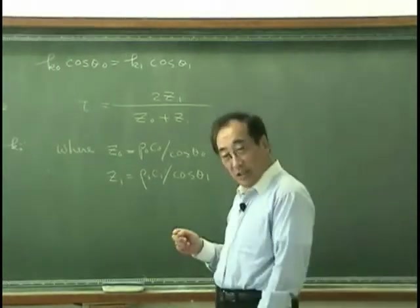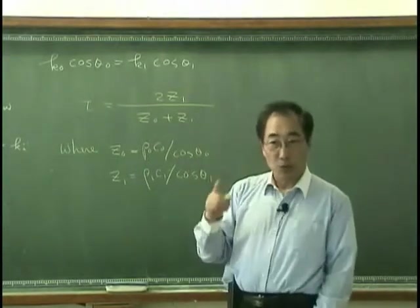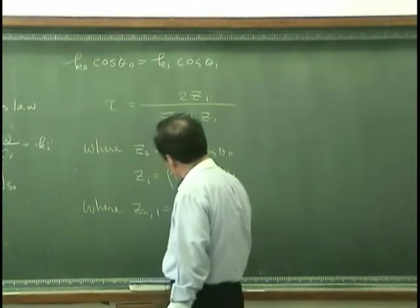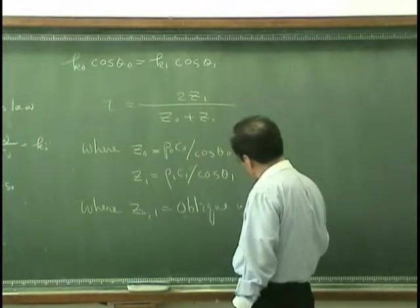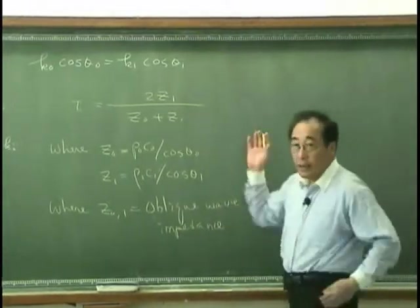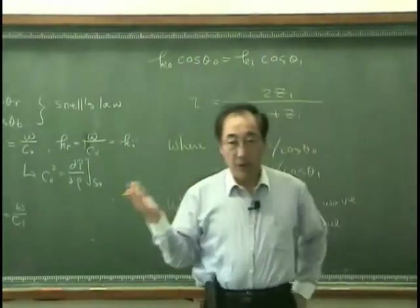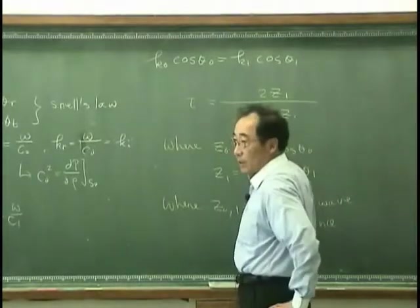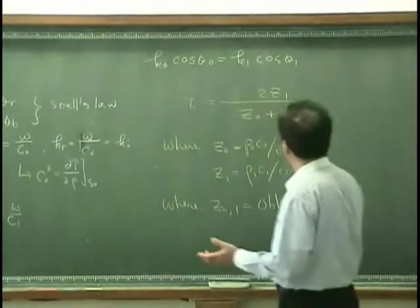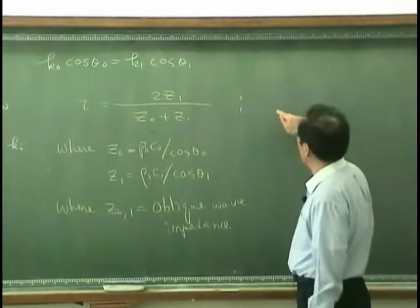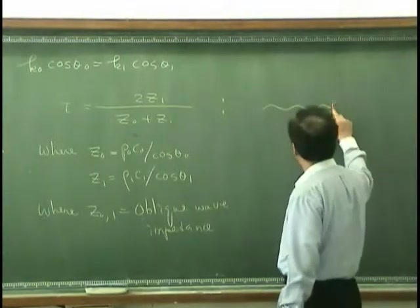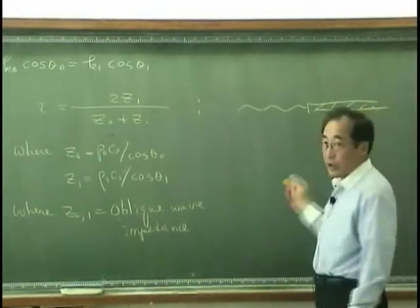So what we learned here is that how much is transmitted compared with the incident wave is totally determined by impedance — so everything is an impedance business. We recall that this is exactly the same formula that determines how much wave is transmitted when we have two different media.